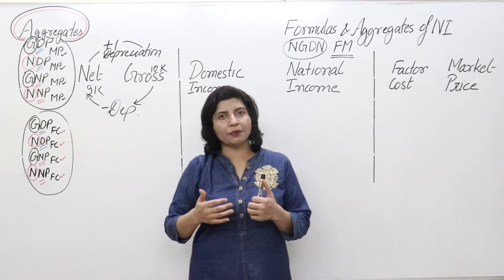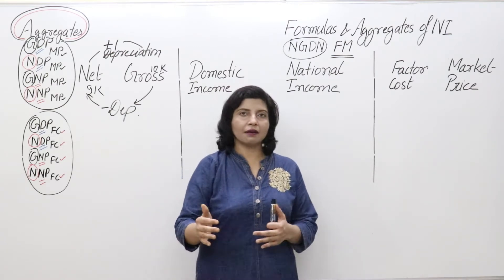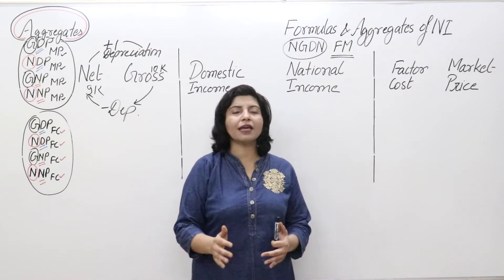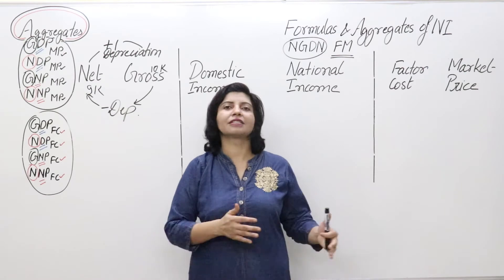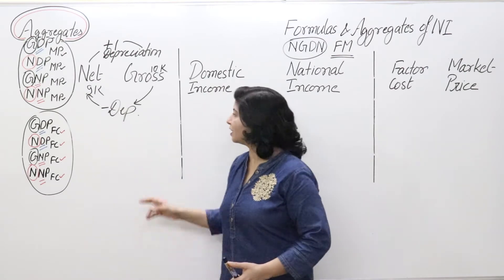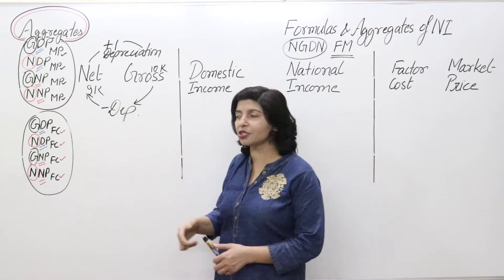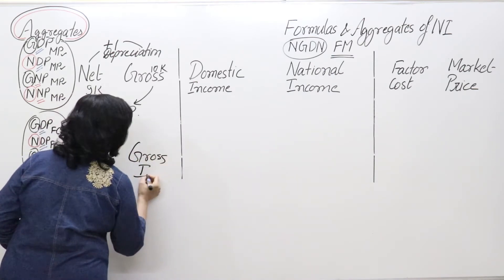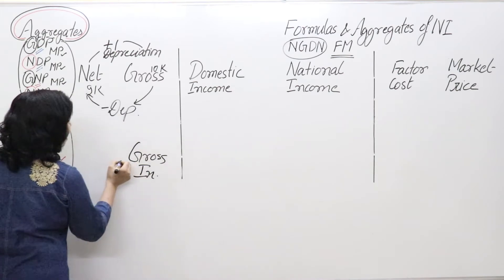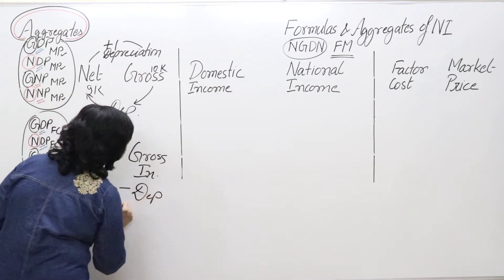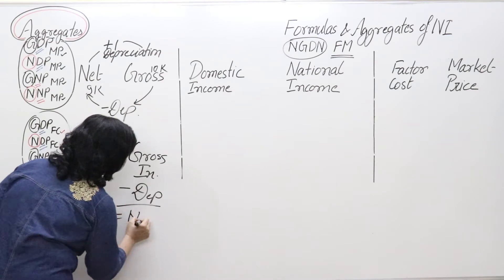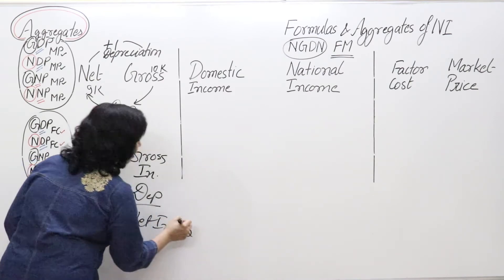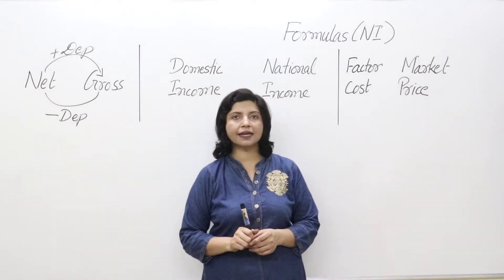In the whole economy as well, when production takes place, machines undergo wear and tear and become unusable over time — they must be replaced. This is depreciation at the economy level. So the gross income or production of the whole nation minus depreciation equals net income in the whole economy.